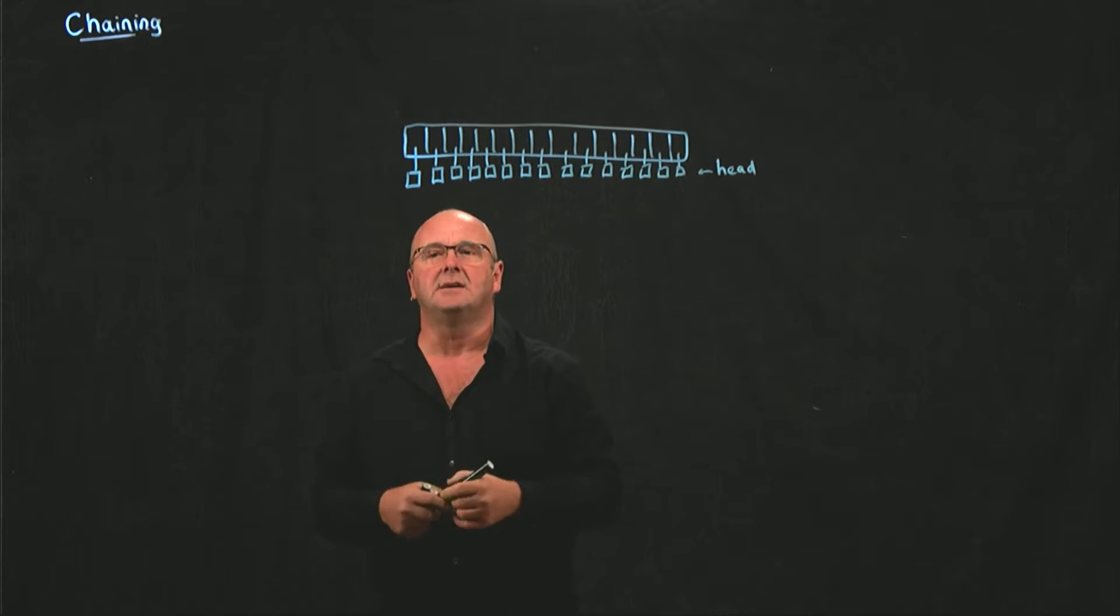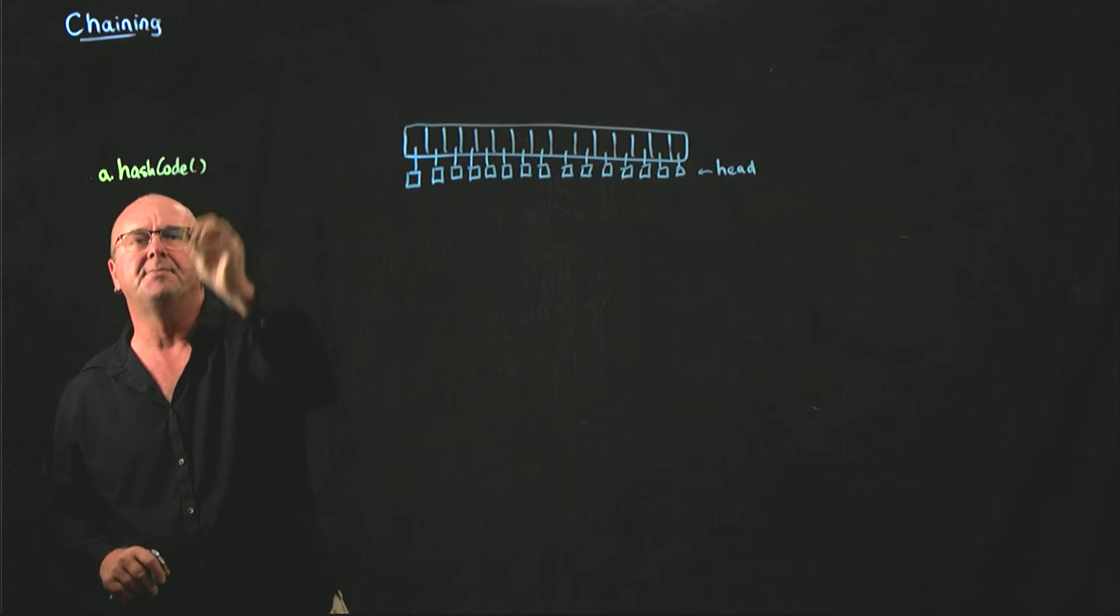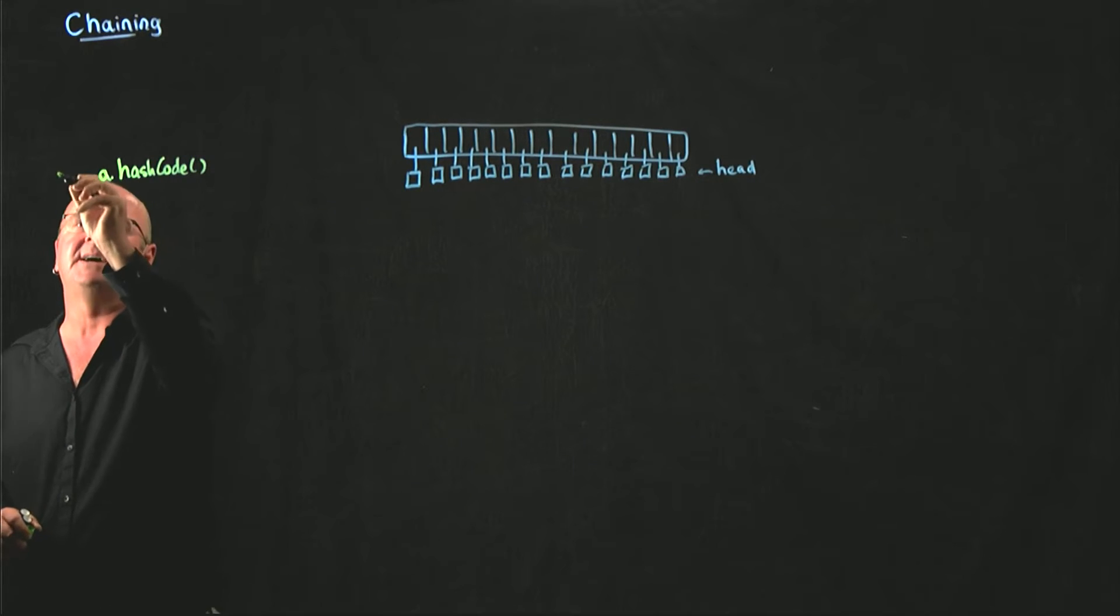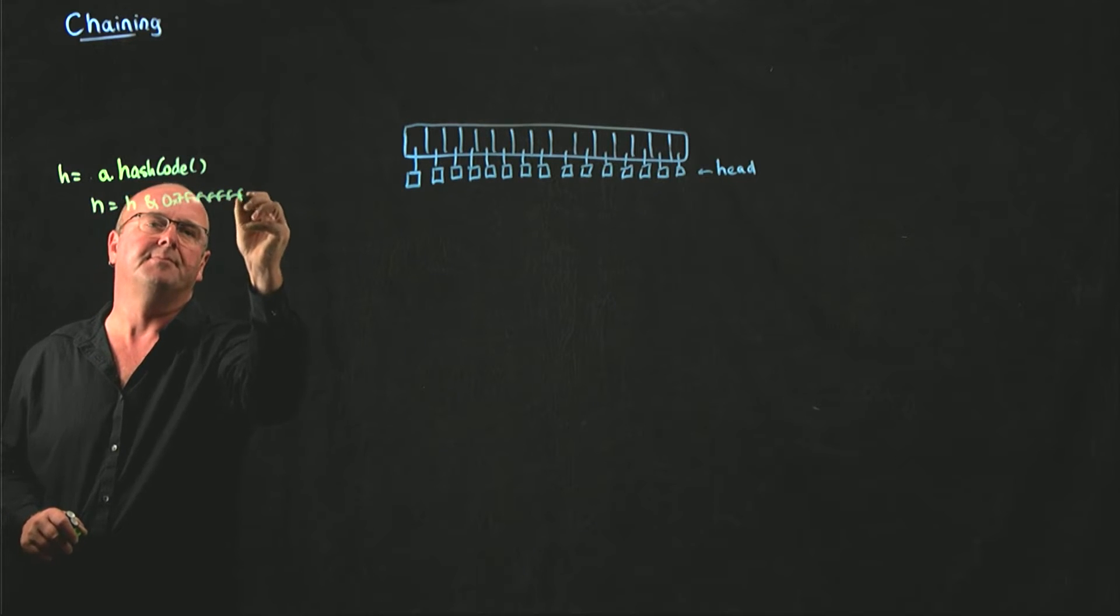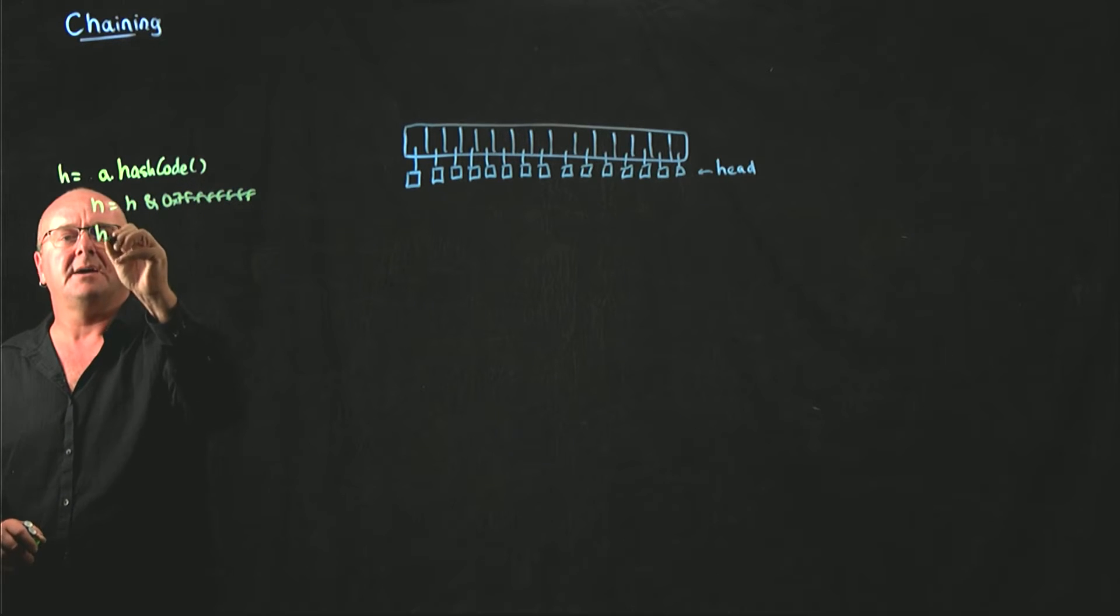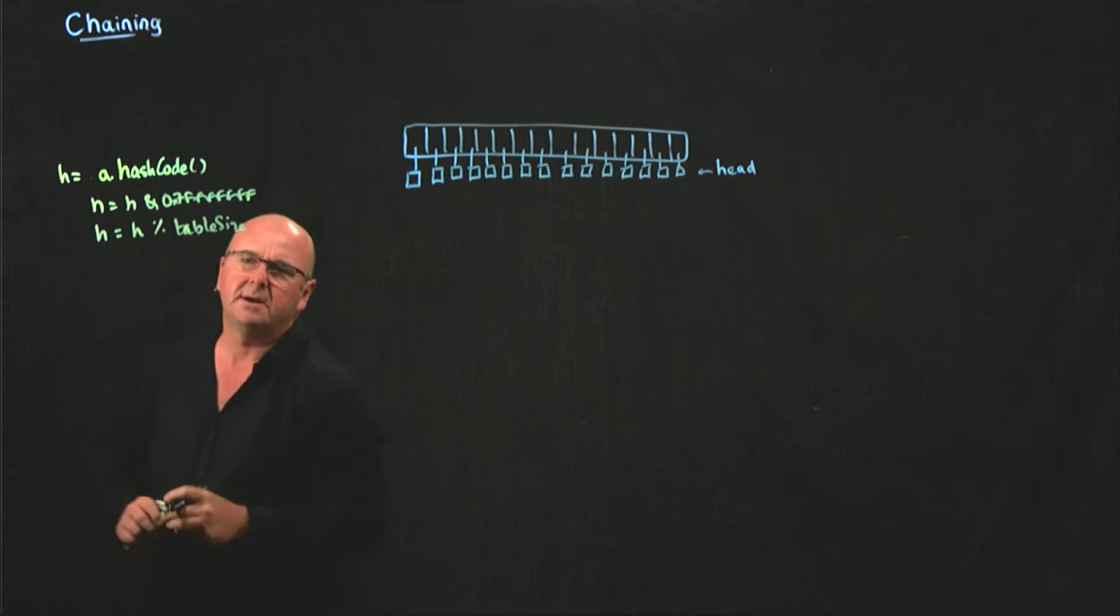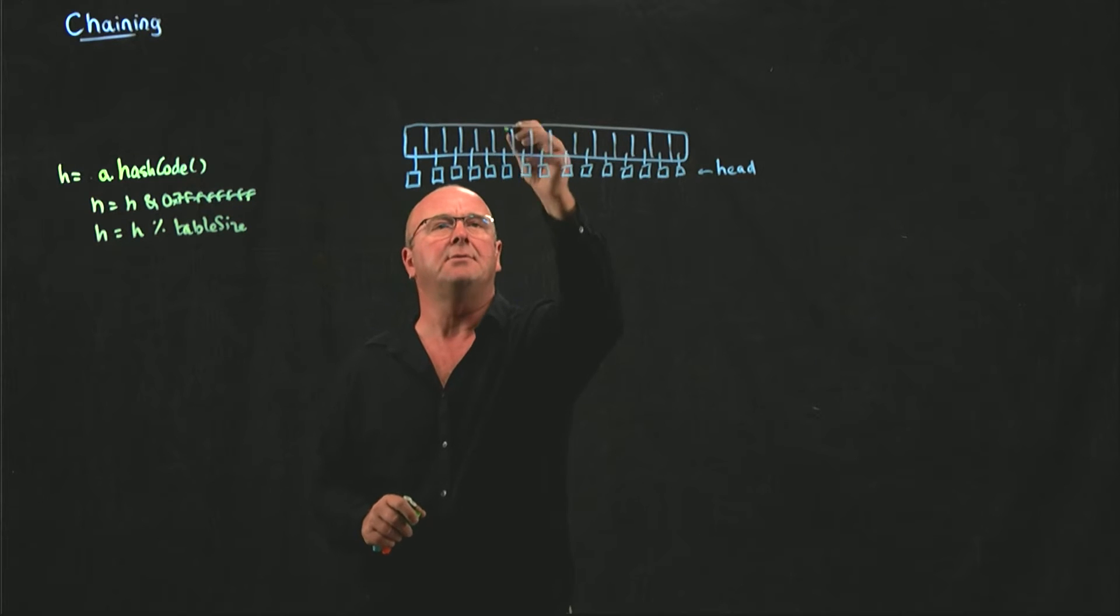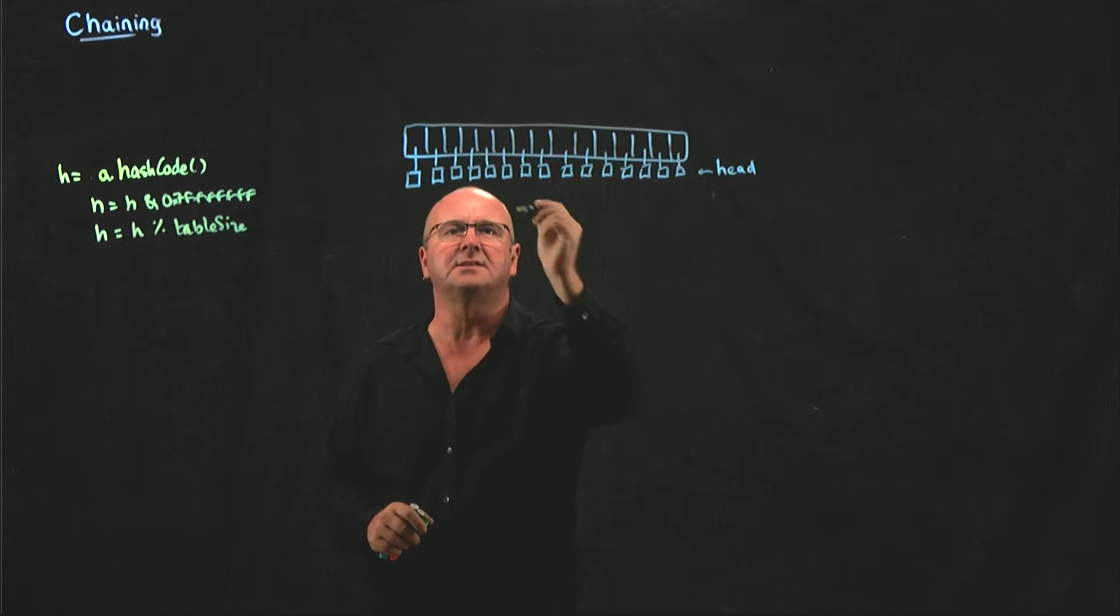Now, I take some data, I call the hash code function, I get the integer back from that. I make that integer positive, and I mod that integer on the table size. That gives me a place in my table where I'm going to add A. I go to that table cell, I get the head node of the linked list, and I call linked list dot add first.